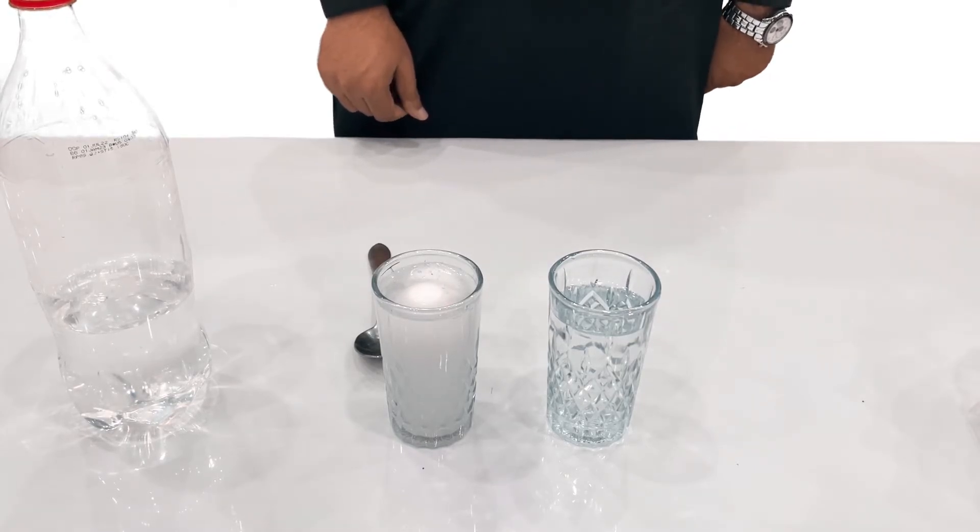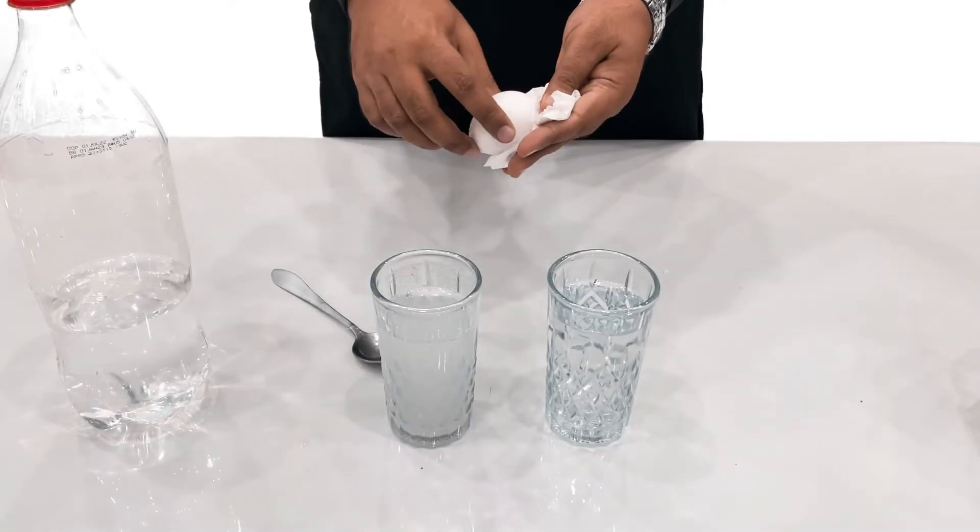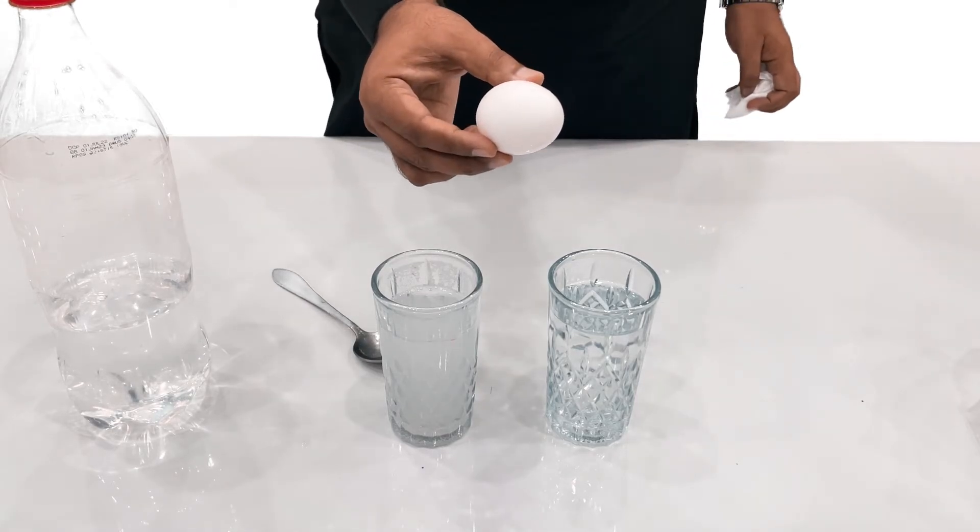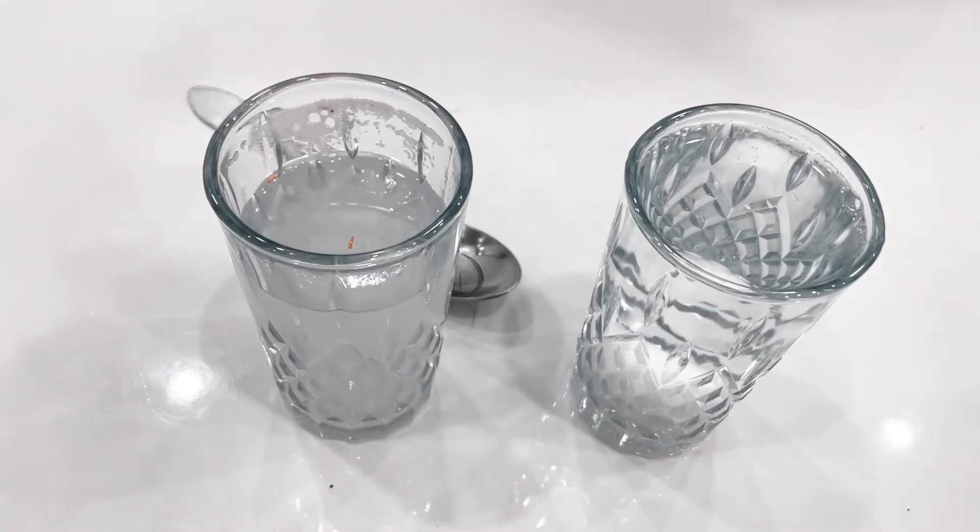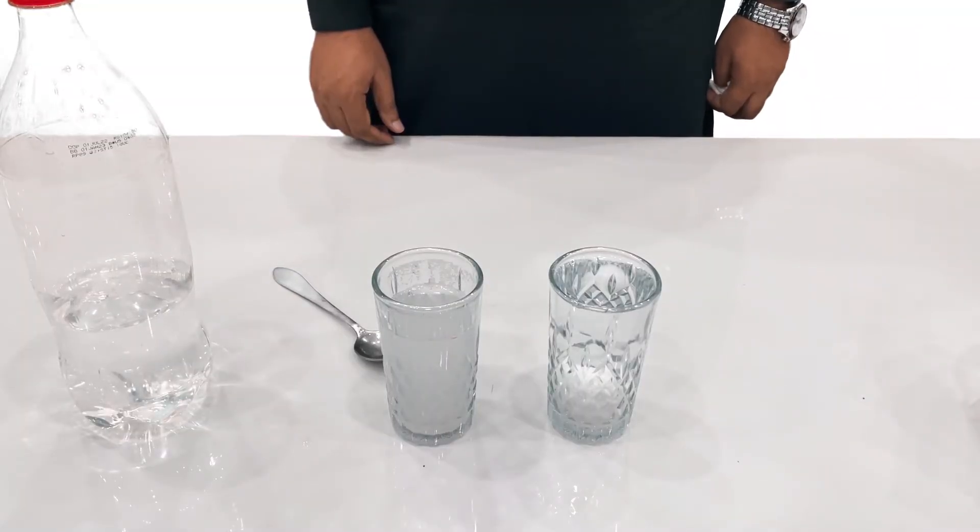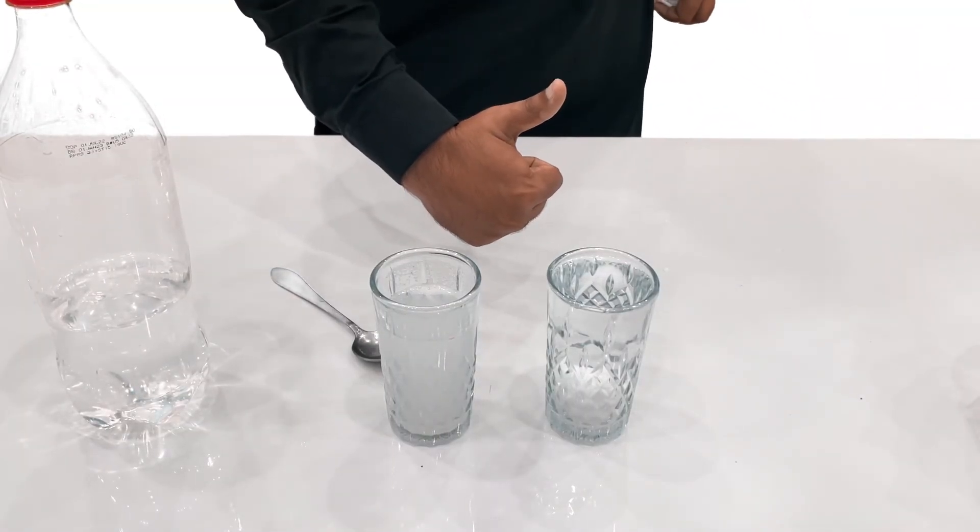After that, we will put the egg in the glass which has plain water. We will observe the egg in the glass is completely drowned. Hence, we can examine the effects of salt on water density in this experiment.